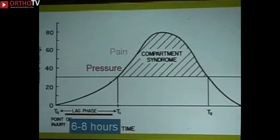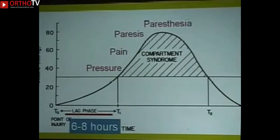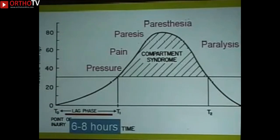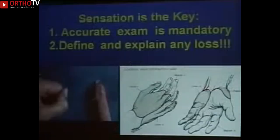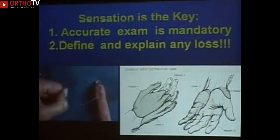We think the threshold pressure is around 30 mmHg, because at that point symptoms begin: pain, paresis, and paresthesias in the limb, which progress to anesthesia and paralysis if left untreated. Eventually, that pressure comes back down — usually after about a week in the natural history — and you end up with the residuals of Volkmann's contracture. This represents the curve of an untreated compartment syndrome.